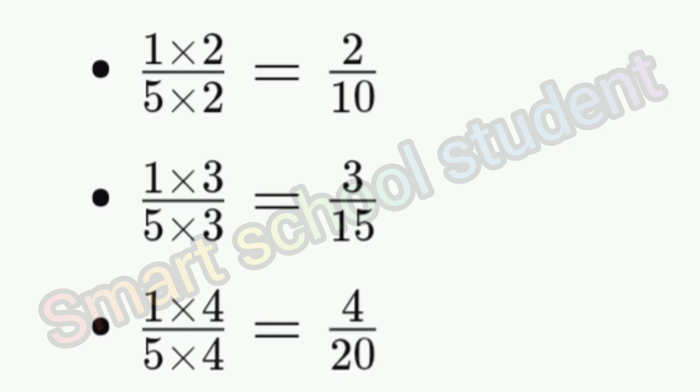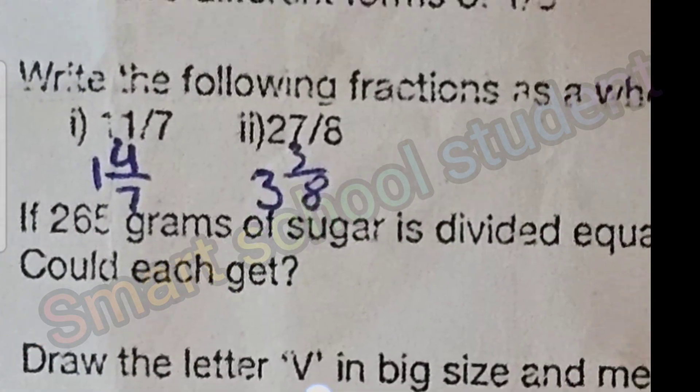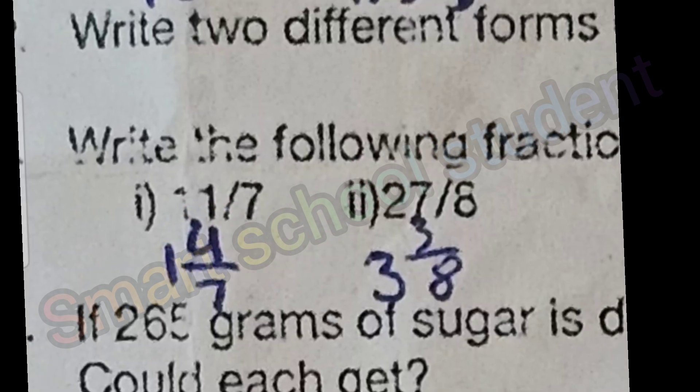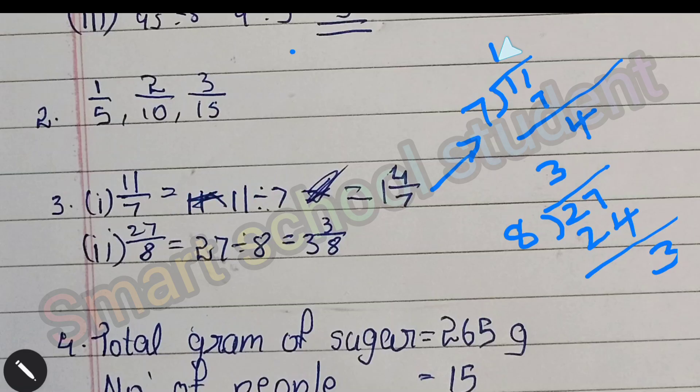Let's move to the third question, write the following fractions as a whole number and fraction. First question is 11 by 7, then 27 divided by 8. For 11 divided by 7, we will get 1 as quotient and 4 as remainder, so 1 and 4 divided by 7. Next question, 27 divided by 8, we get 3 as quotient and 3 as remainder, so we can write as 3 and 3 by 8.